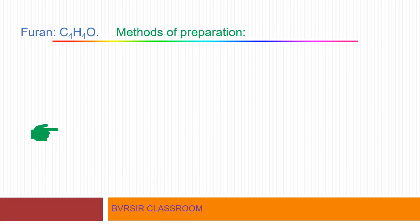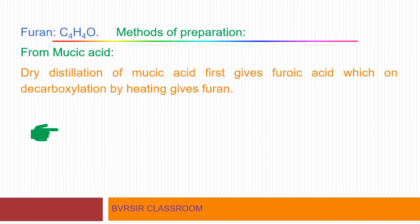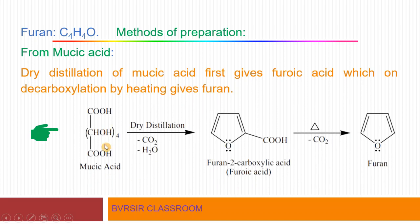Furan's molecular formula is C4H4O. The first method of preparation is from mucic acid. On dry distillation, mucic acid gives furan-2-carboxylic acid, which is commonly called furoic acid or furanic acid. On heating this molecule, the COOH group at the second position undergoes decarboxylation — elimination of CO2 — to yield furan. This step is called a decarboxylation reaction because there is elimination of carbon dioxide gas.